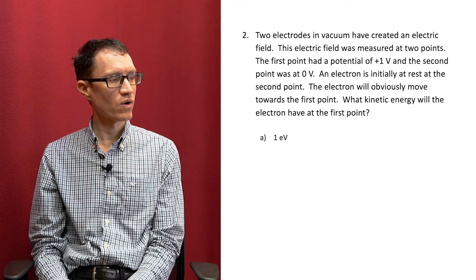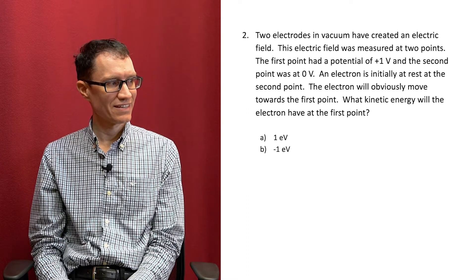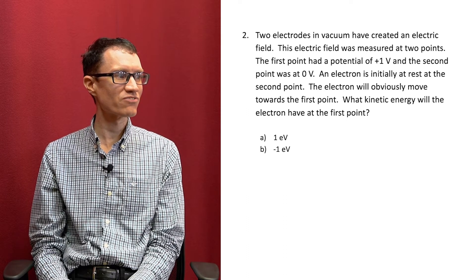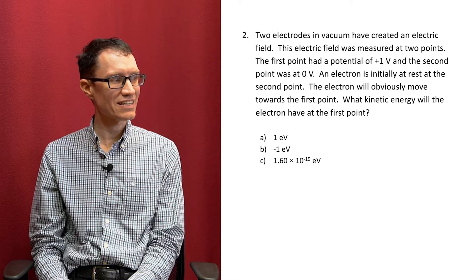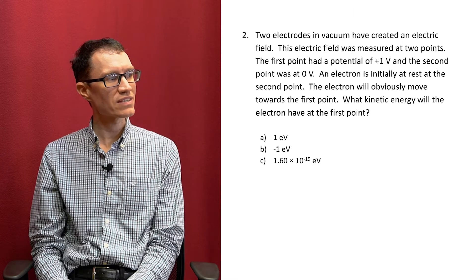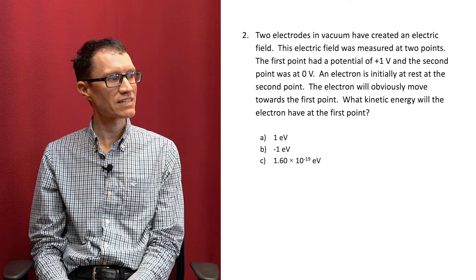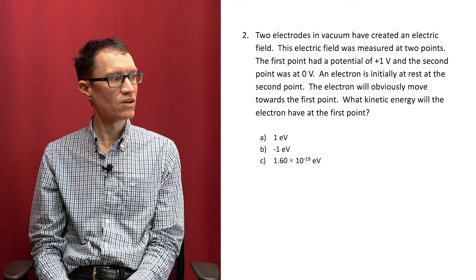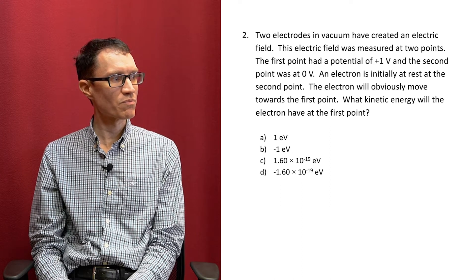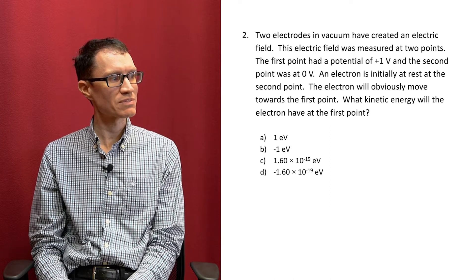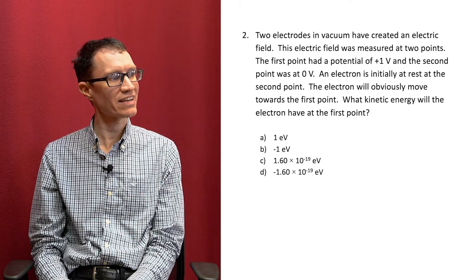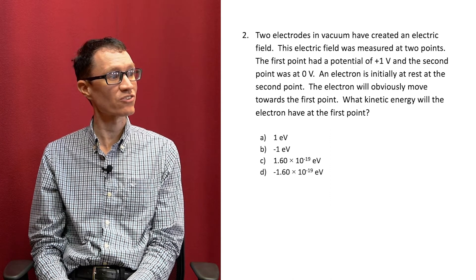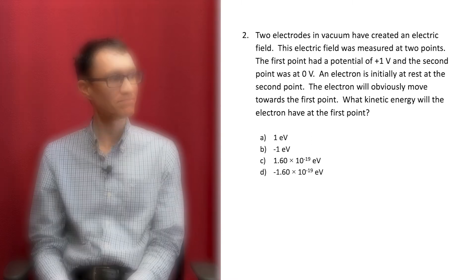Will it have: A: 1 electron volt? B: Negative 1 electron volt? C: 1.6 times 10 to the negative 19 power electron volt? Or D: Negative 1.6 times 10 to the negative 19 power electron volt?